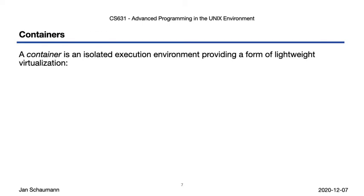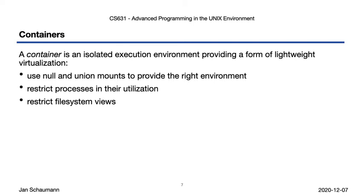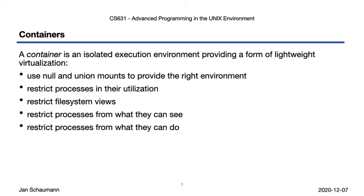Containers, as the name suggests, are a way to contain processes — they provide an isolated execution environment on, and this is the important distinction from full hardware virtualization, the same operating system, providing a lightweight approach. In order to contain a process, you might use a null or union mount to provide the right filesystem view, restrict the processes in their utilization to avoid interference with the parent system or other processes, restrict filesystem visibility beyond the assigned views, restrict processes from what other processes they can see, and restrict processes from what they can do. Cgroups and namespaces are frequently discussed together as they complement each other well.